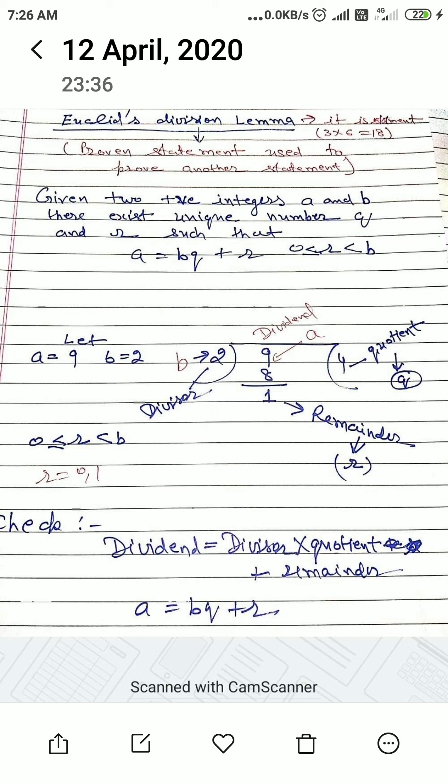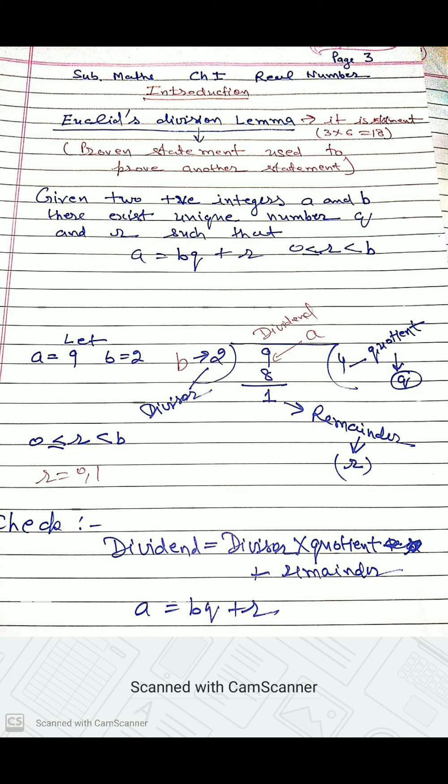Given two positive integers a and b, there exist unique, unique means one and only one, like all children of our class are unique, all are different.